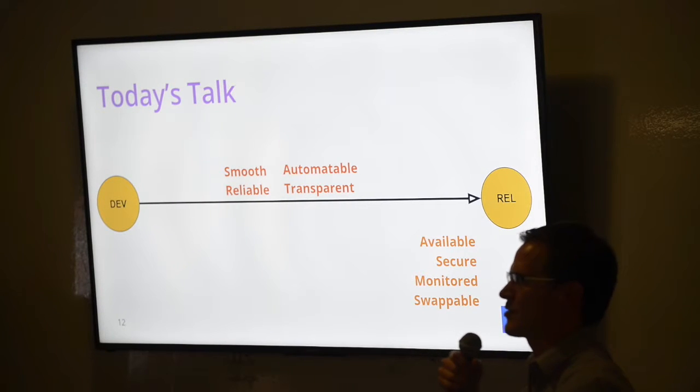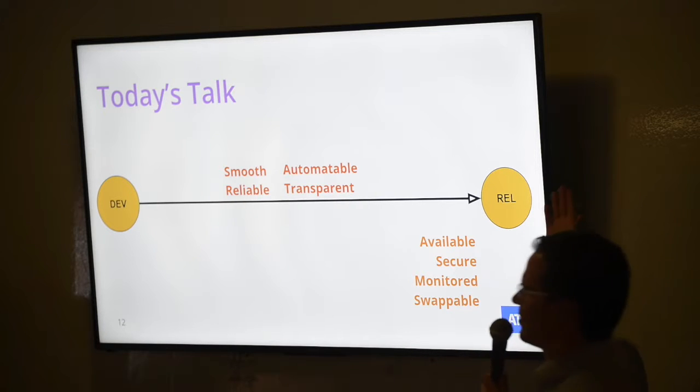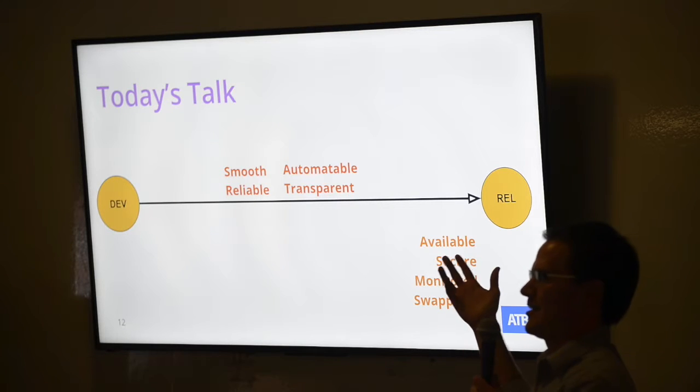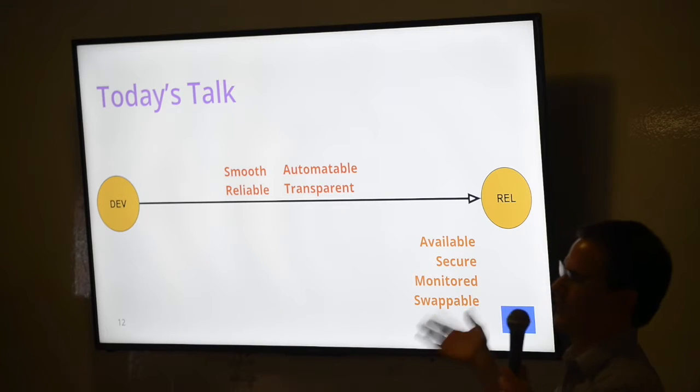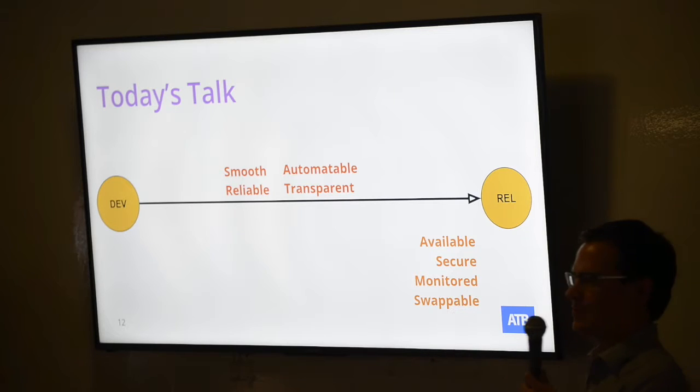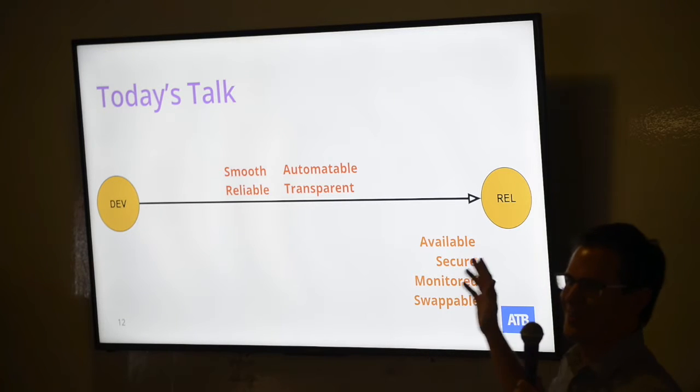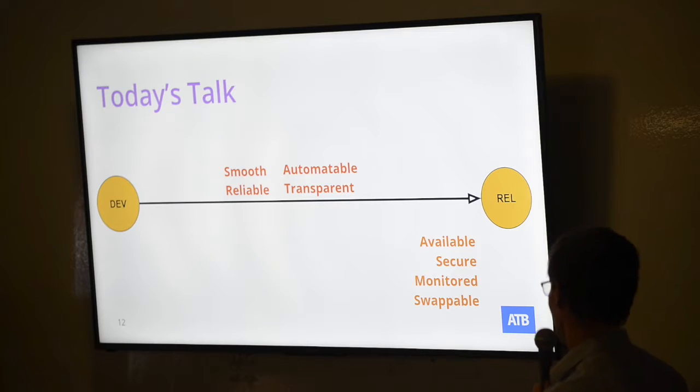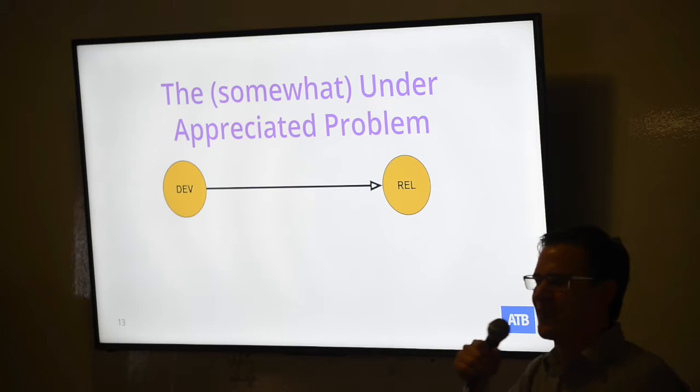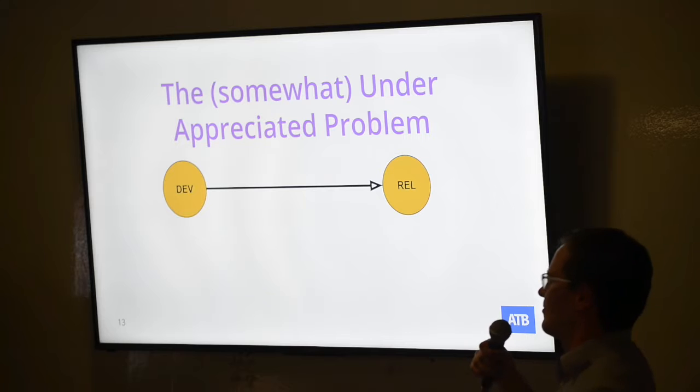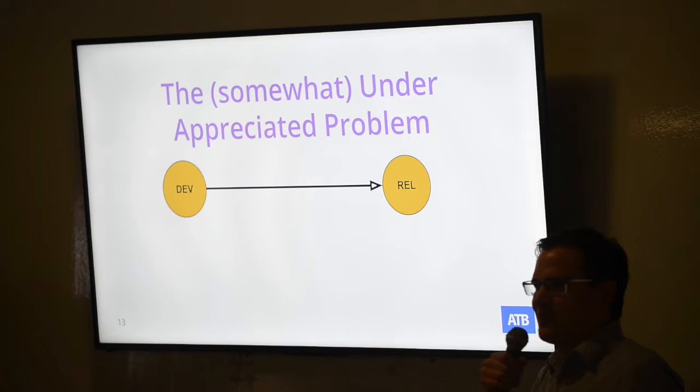Now what we're actually pushing to release here, we have a few requirements for it as well. So we'd like it to be available. We'd like it to be secure. We want it to be monitored. So we want to know, is it still up? And if it's up, is it doing what it's supposed to be doing? And then finally, we want it to be swappable. So if it's no longer working as expected, how can we swap it out? Seems pretty easy, right? Nothing too complicated here. It should be a well understood problem. But what I'm going to tell you is the opposite. It's a somewhat underappreciated problem, at least that I've observed within the field.